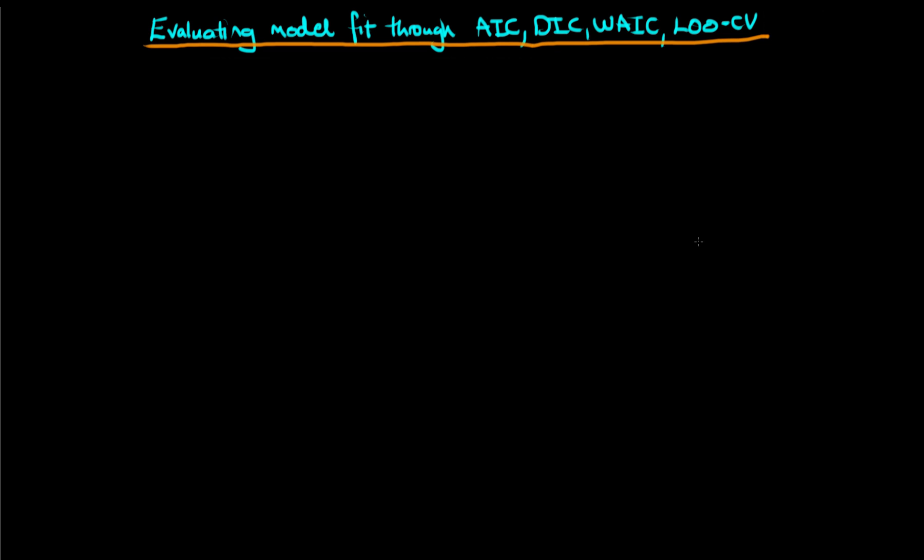In this video, I'm going to talk through some of the most common metrics for evaluating the predictive fit of your model to data. The specific metrics I'm going to talk about are the AIC, the Akaike Information Criteria, DIC, the Deviance Information Criteria, the WAIC, which is either the Widely Adopted Information Criteria or the Watanabe Akaike Information Criteria, and LOO-CV, which stands for Leave One Out Cross Validation.